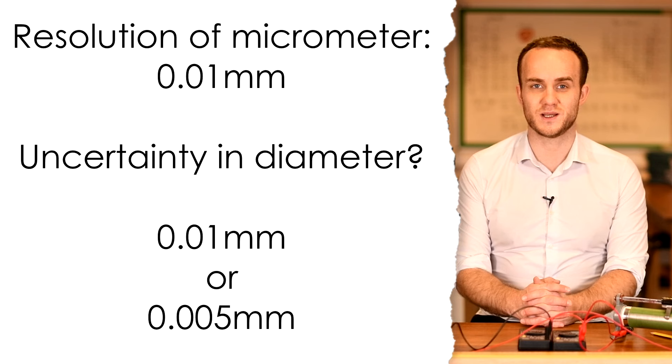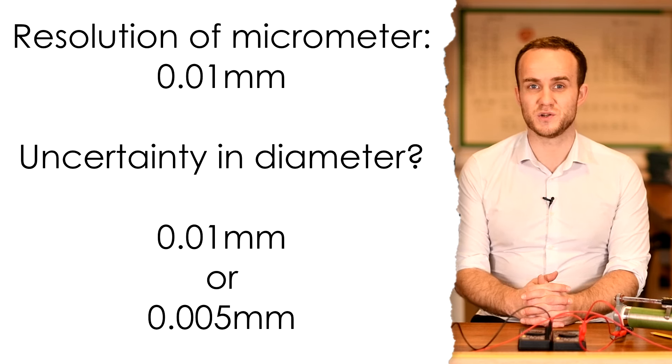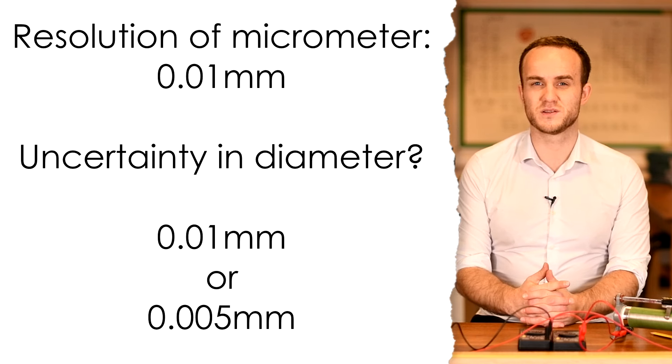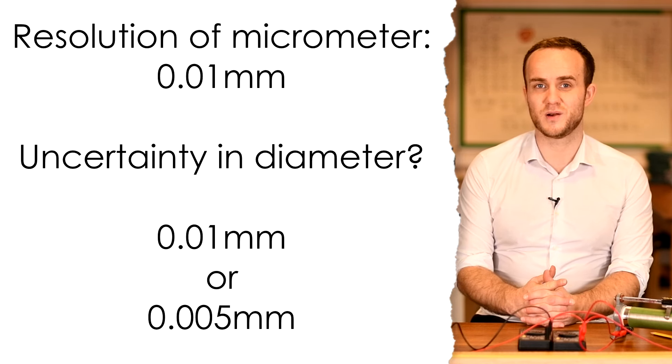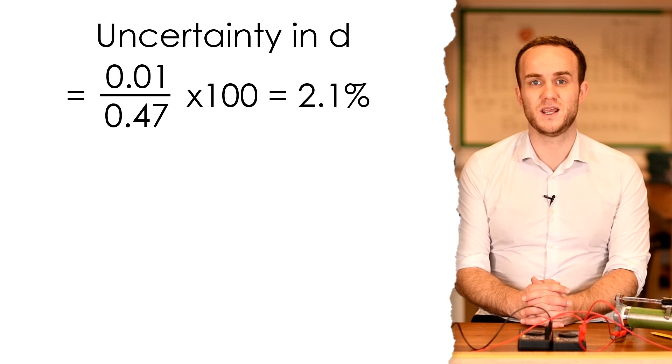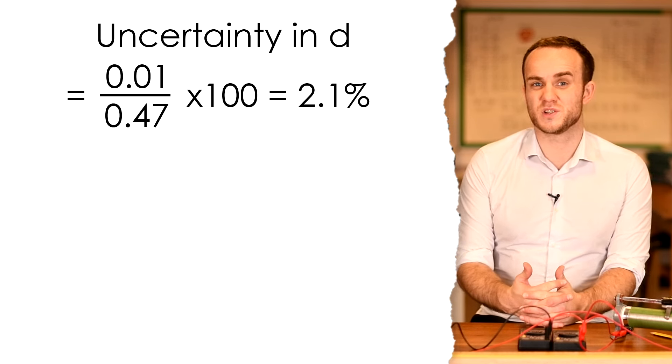Now there is some debate as to whether the absolute uncertainty in our value for the diameter should be 0.01 or should be half that, half the resolution because there shouldn't be any zero error. However, the exam boards have pretty much said that they'd be okay with either. And erring on the side of caution I'd say that the uncertainty is 0.01 millimeters. So the percentage uncertainty in our diameter is going to be 0.01 divided by 0.47 or just 1 divided by 47 times 100, and that gives us 2.1%.